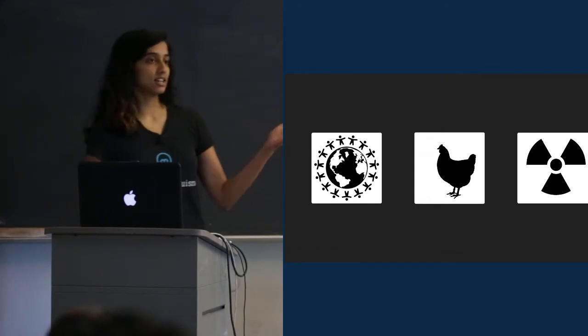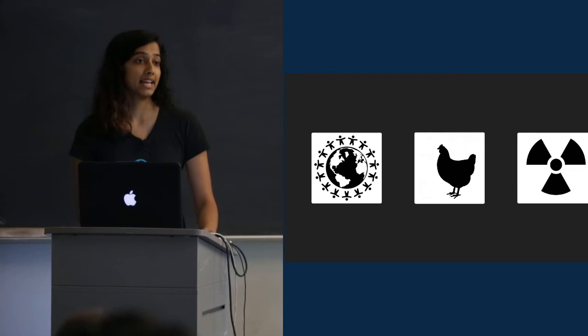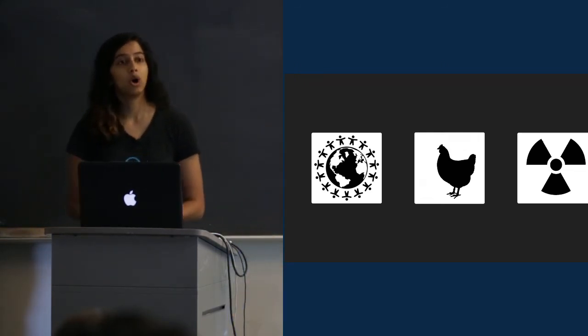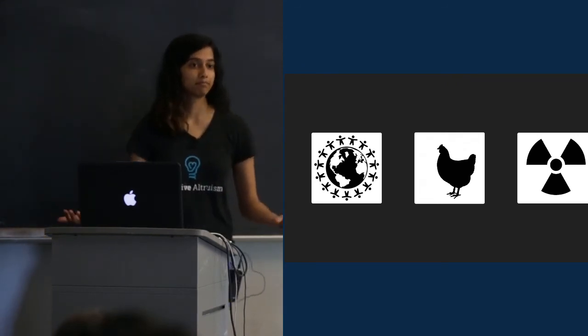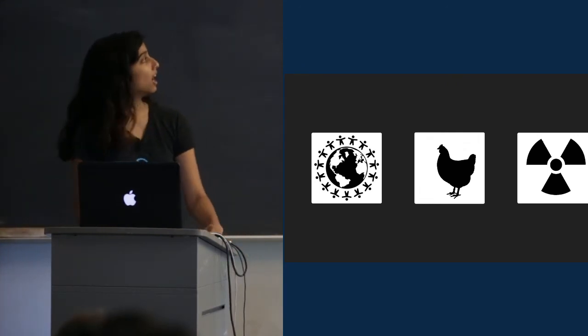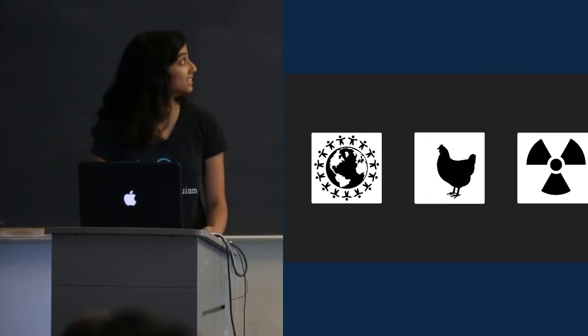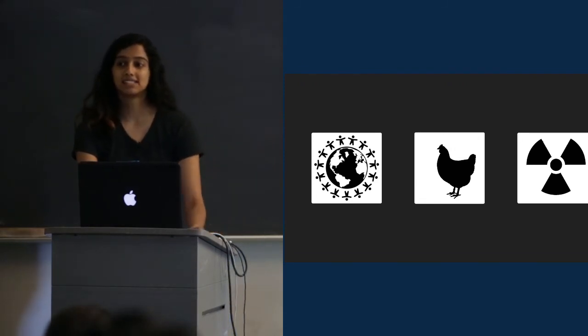So these are the three causes that are the most popular in effective altruism, but they're not by any means the only causes. Many people, for example, believe that opening our borders to immigration is the most effective way that we can fight poverty all over the world. Others believe that educating people who are already altruistically minded on rationality and decision making is the best way that they can have a leveraged impact on the world.